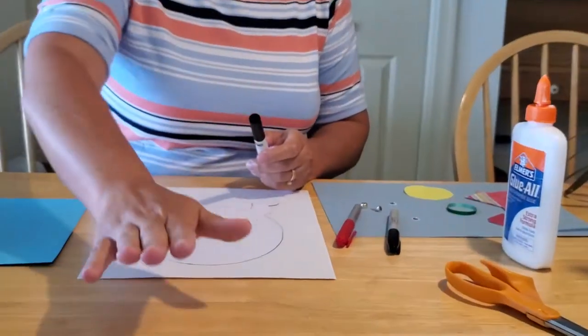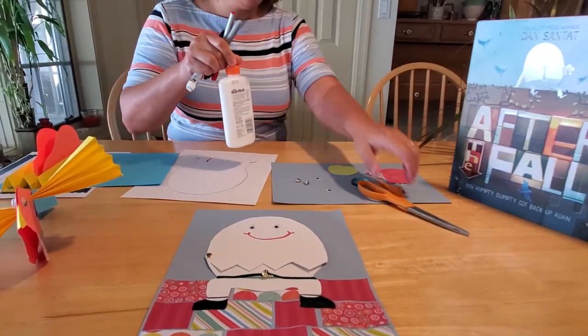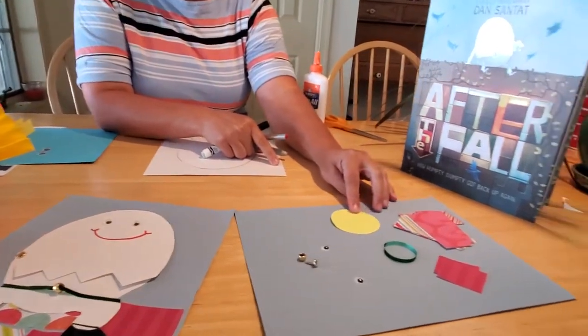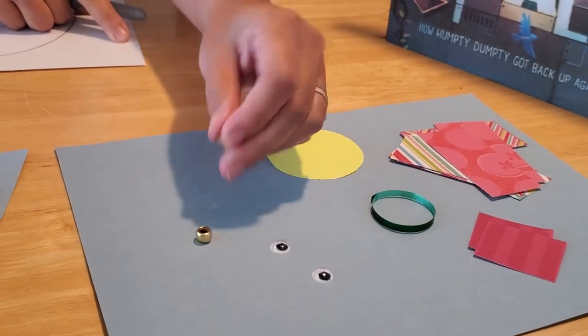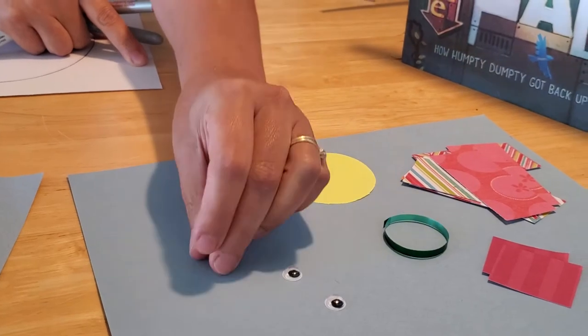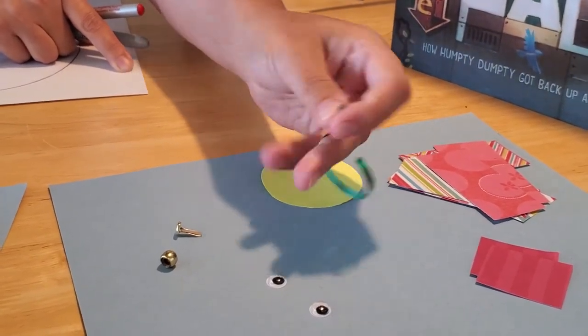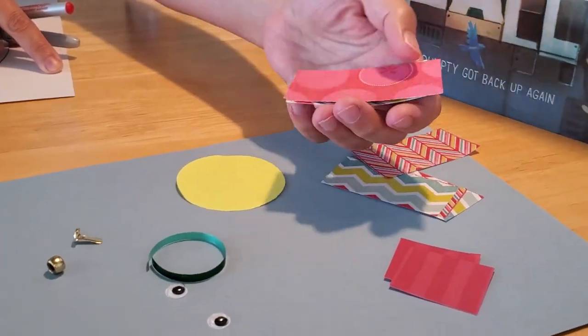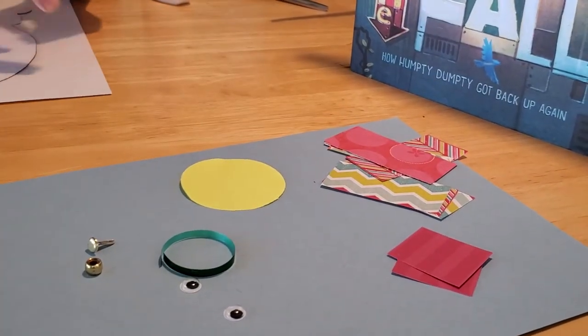You're also going to need a blue sheet of construction paper. You're going to need some scissors and glue, some markers. And then you're also going to need a yellow circle for the yolk inside your egg. You're going to need some googly eyes, a little brass fastener and a brass bead, and about a three-inch strip of ribbon for his belt. And then all of these rectangles, there's about eight or nine rectangles and about four or five squares that you're going to need to build Humpty Dumpty's wall.